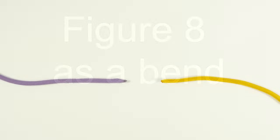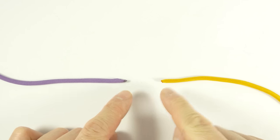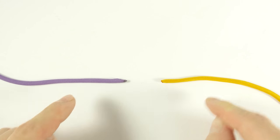So we now know how to use the figure 8 knot both as a stopper knot or as a loop. Now the third major application for the figure 8 knot is as a bend. As a bend, the figure 8 knot is used to join two ends of a rope.